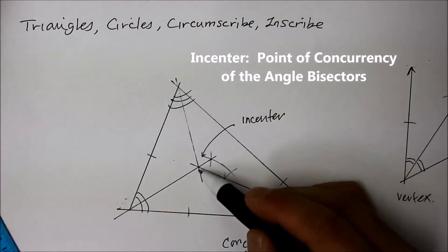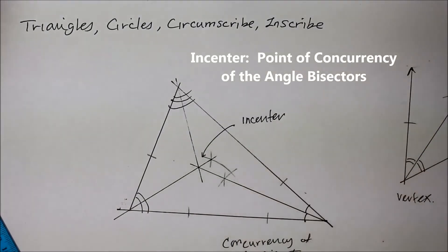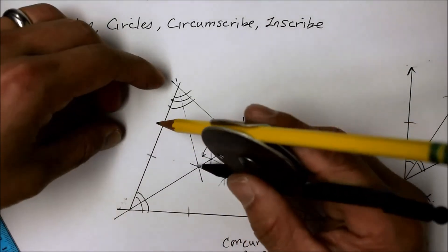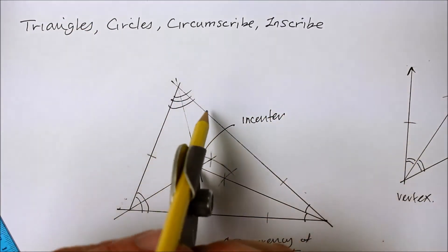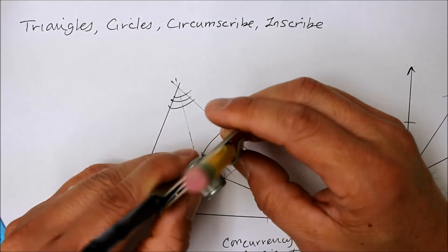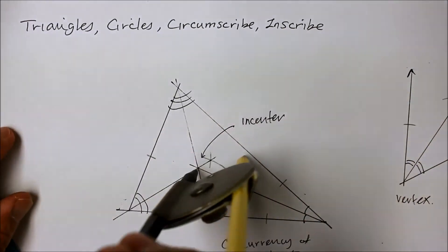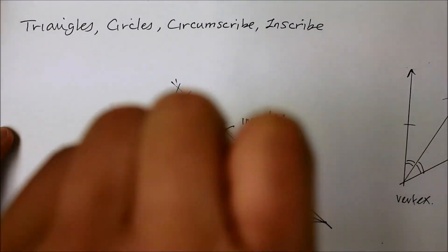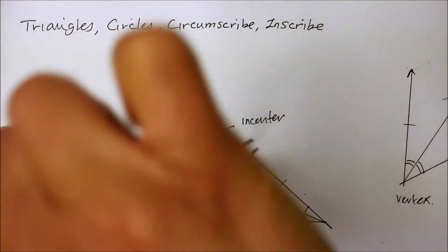And the distance from the incenter to the tangent, well here, before I blabber on, let me draw a circle using that as a center. The word center implies that there's a circle there somewhere. So let's draw a circle.